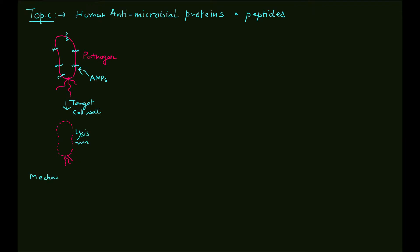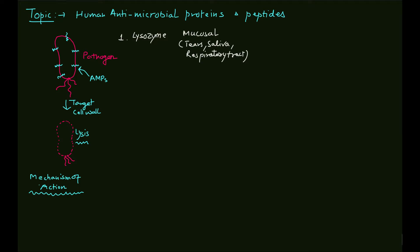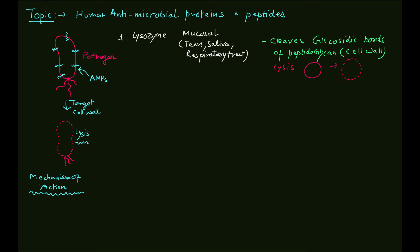Now let's discuss the important antimicrobial proteins one by one. First is lysozyme. Lysozyme is present on mucosal surfaces — in tears, saliva, and the respiratory tract — and plays an important role as an antimicrobial agent. Lysozyme cleaves glycosidic bonds of peptidoglycan, which is the cell wall of bacterial cells, causing lysis and death of the bacterial cell.